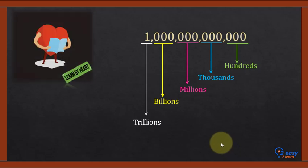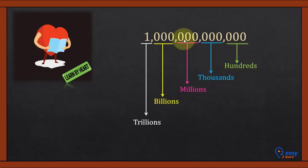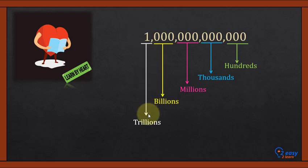Learn by heart. Students, you have to memorize the sequence of these groups — these are not the place values, these are the groups. The first three-digit group is called hundreds. The next group is thousands. The next three digits is millions. The next three digits is billions. And the next one is trillions. The place values are different: units, tens, and so on.